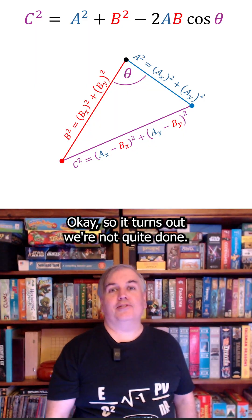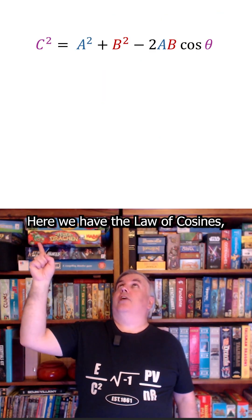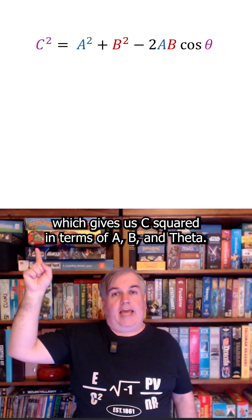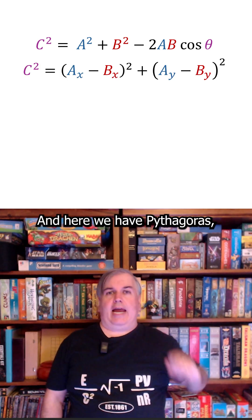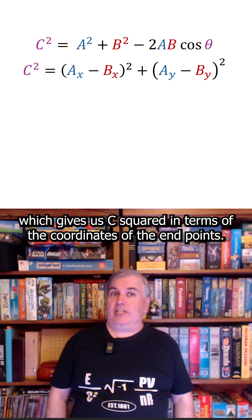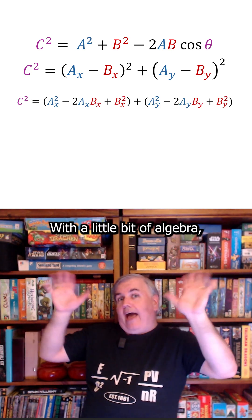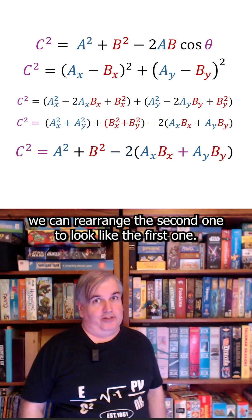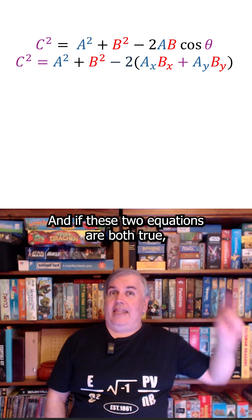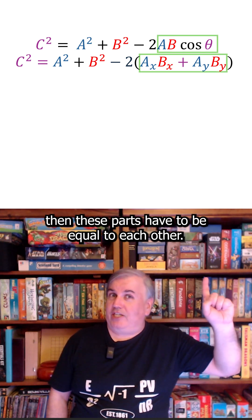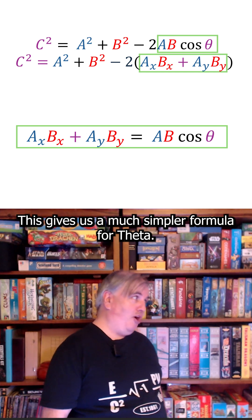So it turns out we're not quite done. Here we have the law of cosines, which gives us c squared in terms of A, B, and theta. And here we have Pythagoras, which gives us c squared in terms of the coordinates of the endpoints. With a little bit of algebra, we can rearrange the second one to look like the first one. And if these two equations are both true, then these parts have to be equal to each other. This gives us a much simpler formula for theta.